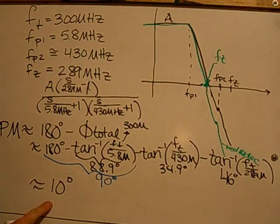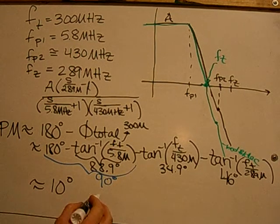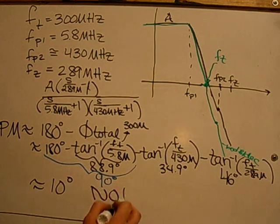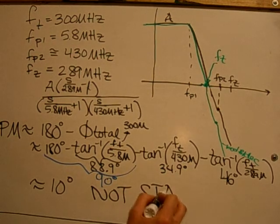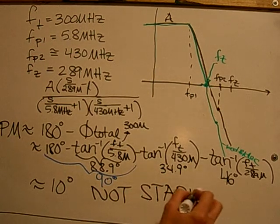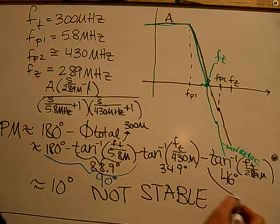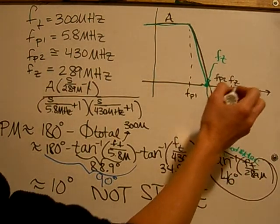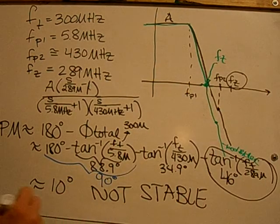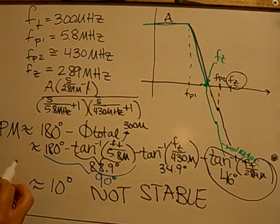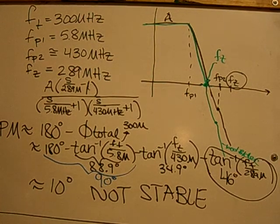So the phase margin at 10 is definitely not stable. In order to make it stable, this is one of the things that definitely needs to be changed, so the F of Z is way bigger than Fp2 and Fp1.